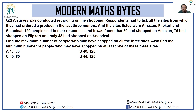Next question: a survey was conducted regarding online shopping. Respondents had to tick all the sites from which they had ordered a product in the last three months — Amazon, Flipkart, and Snapdeal. 120 people sent in their responses. It was found that 80 had shopped on Amazon, 75 on Flipkart, and only 45 on Snapdeal. Find the maximum number of people who may have shopped on all three sites.